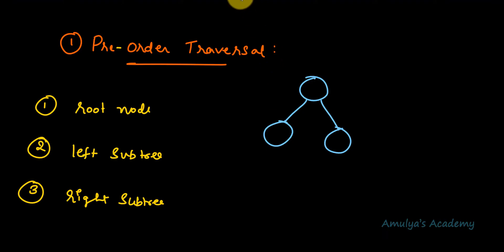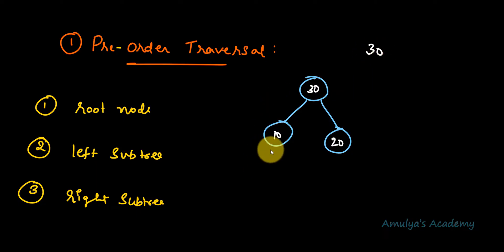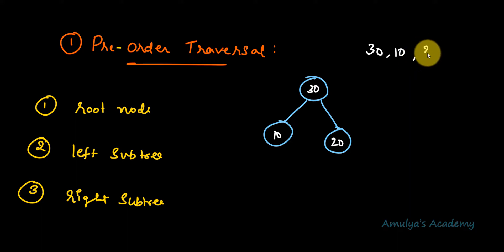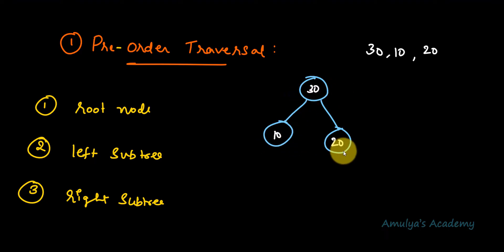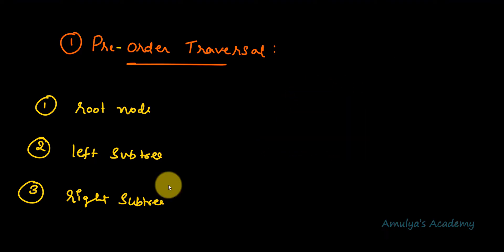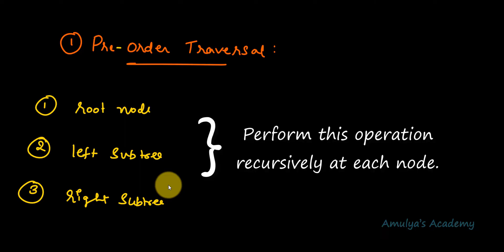For example, if I have a simple tree, first I need to visit the root node — root node is 30. Next I visit the left subtree, which contains only one node: 10. Next I visit the right subtree: 20. So in pre-order traversal we get 30, 10, and 20. You need to perform this operation recursively.